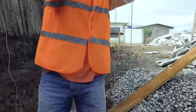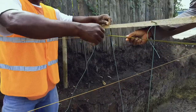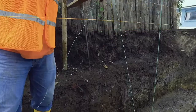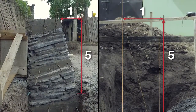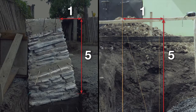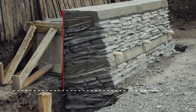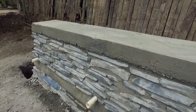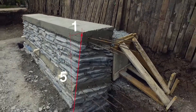Inclination. The front of the retaining wall must be tilted towards a slope in a ratio of 5 to 1. This means for every 5 cm up, lean back 1 cm. The back of the retaining wall, the invisible one, must be vertical. This inclination ratio of 5 to 1 gives stability to the wall and balances the loads.